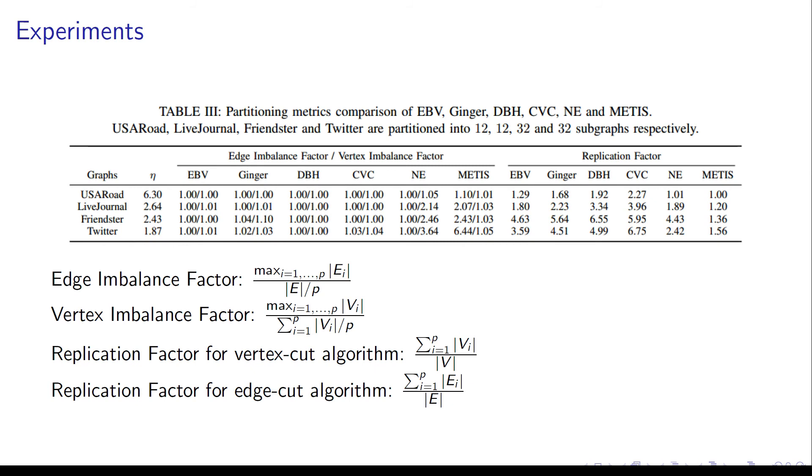All these metrics are better when they are close to 1. From this table, we can find that although NE and METIS have small replication factor, they produce large imbalance factor. This phenomenon explains why EBV outperforms them.